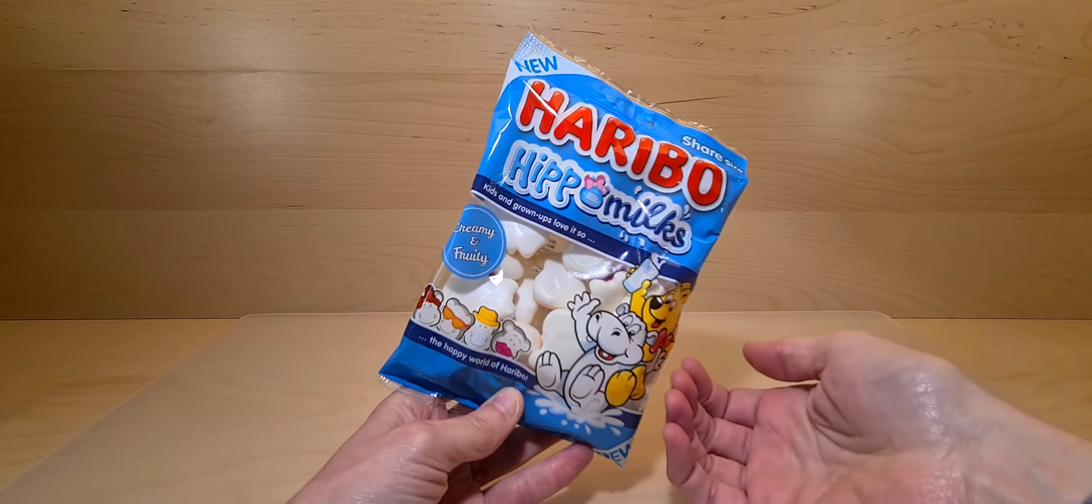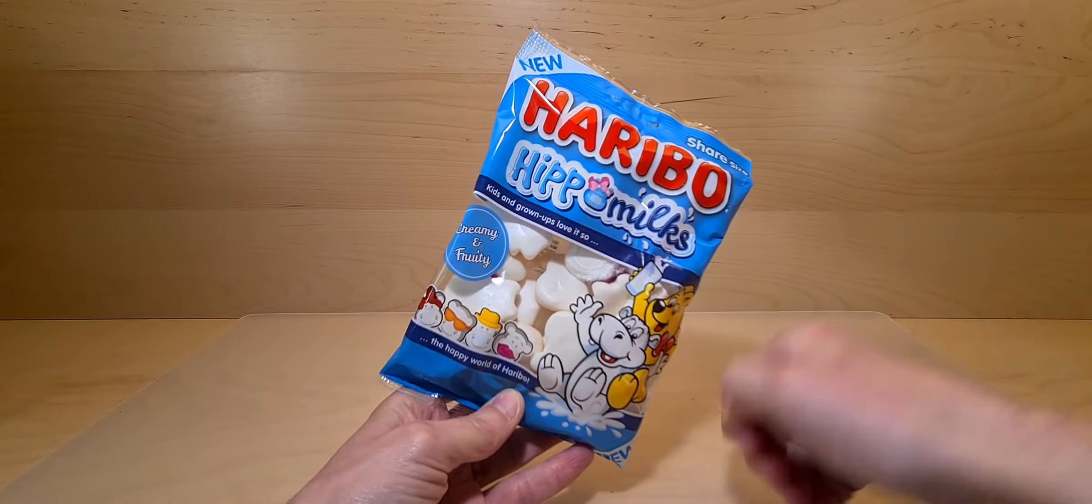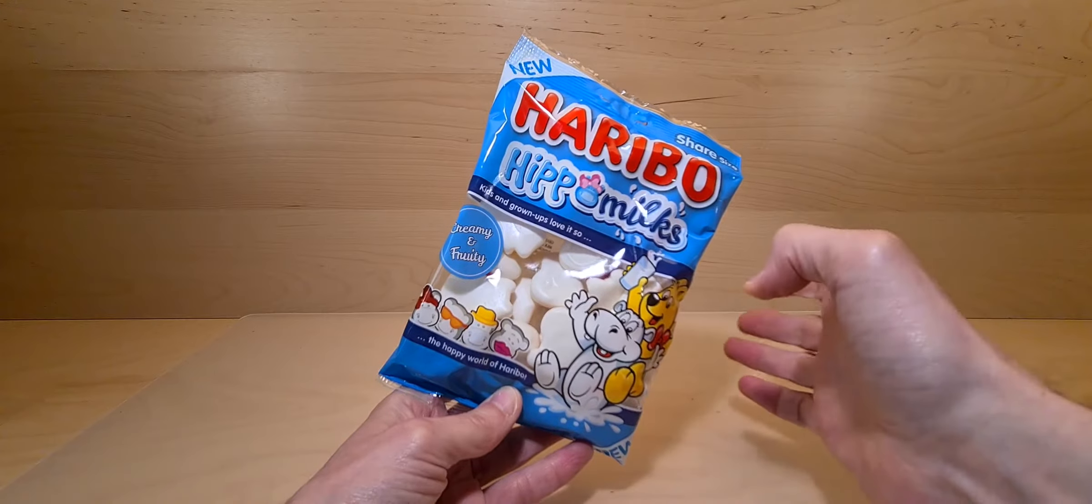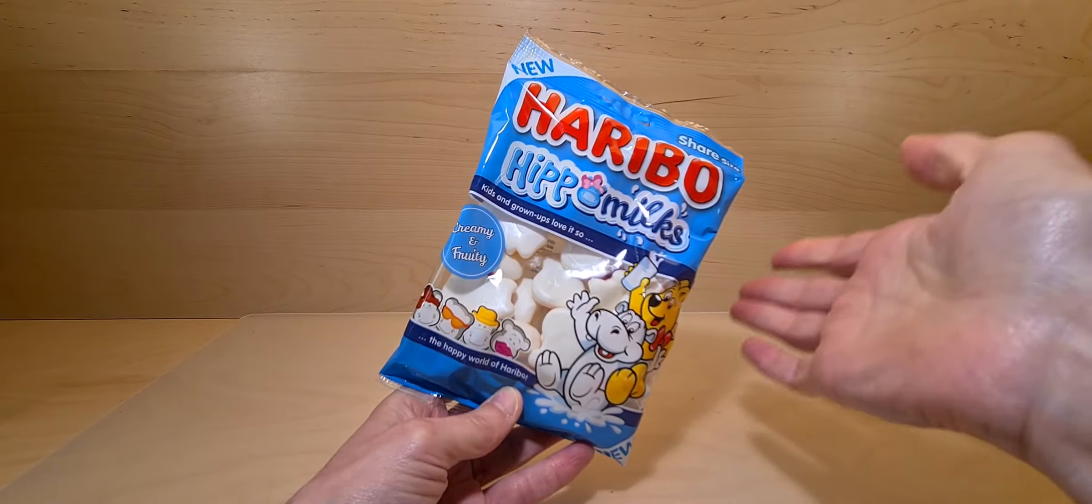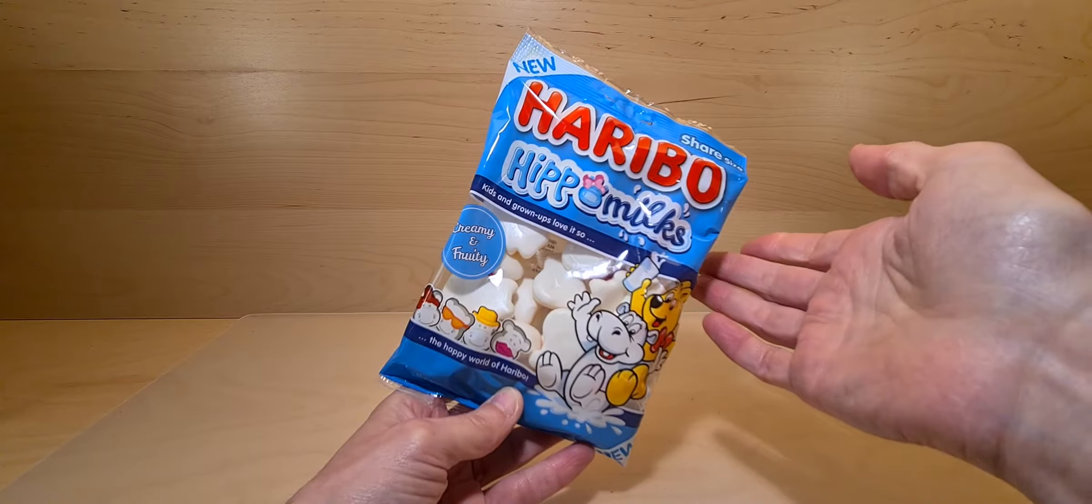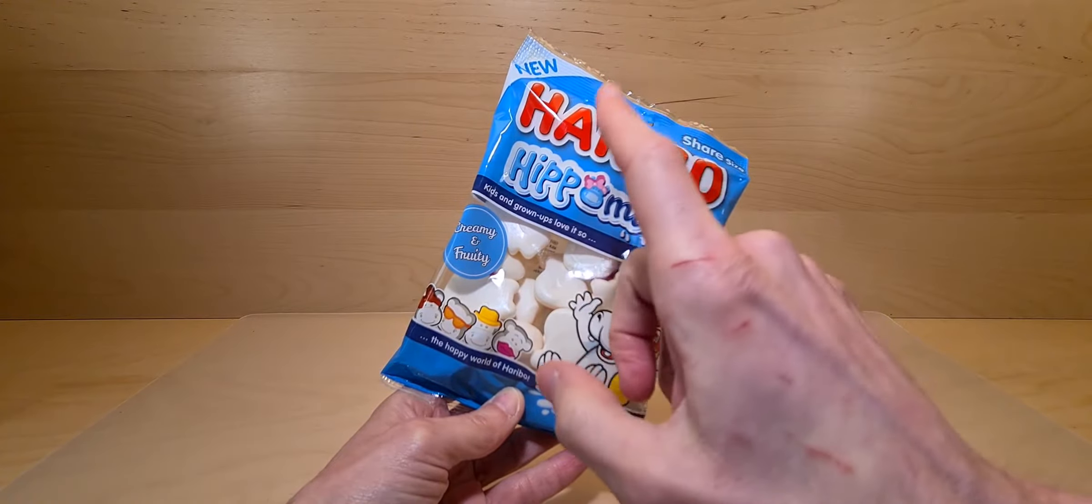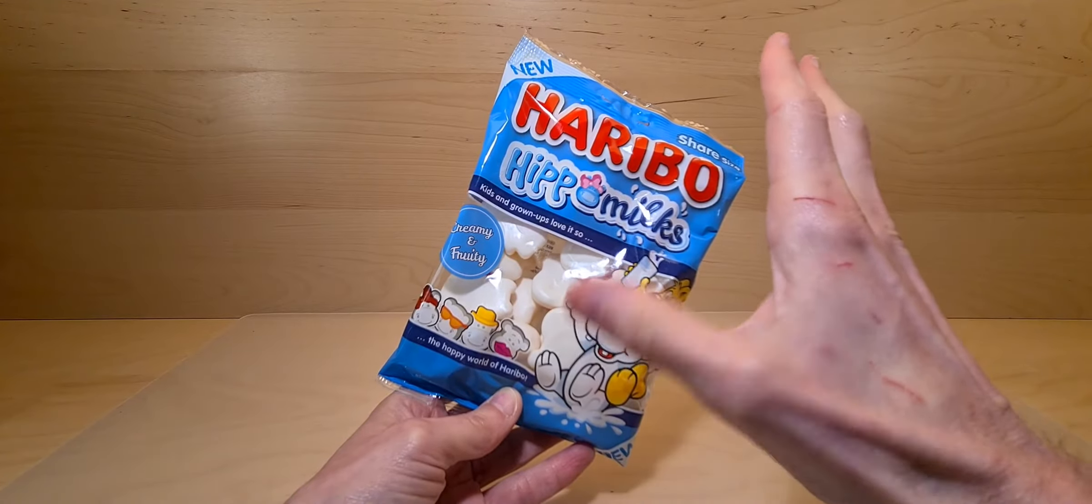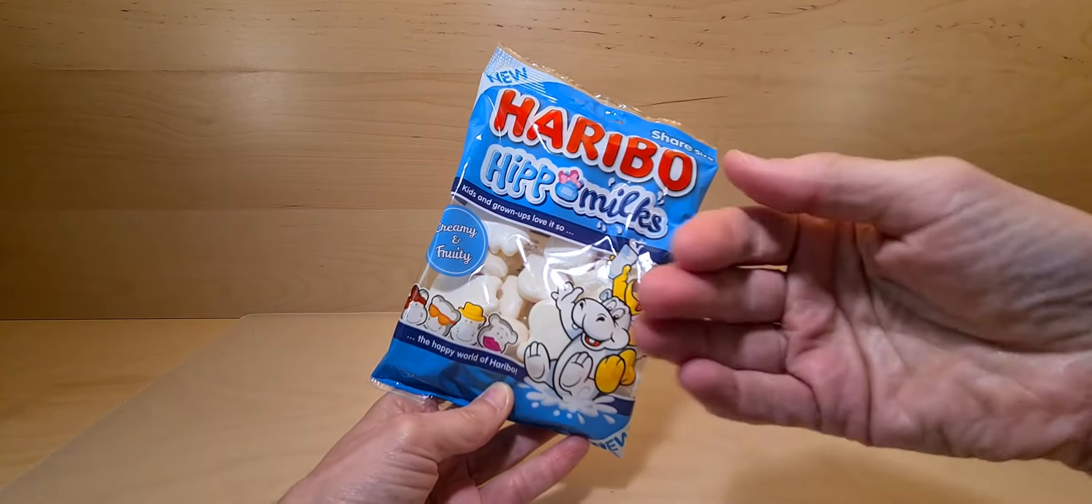These are Haribo hippo milks. First thing that popped in my head is how the heck do you milk a hippo? Probably very carefully as they're like the most dangerous animal in the world, or one of the most dangerous animals in the world, but we're not worried about that.